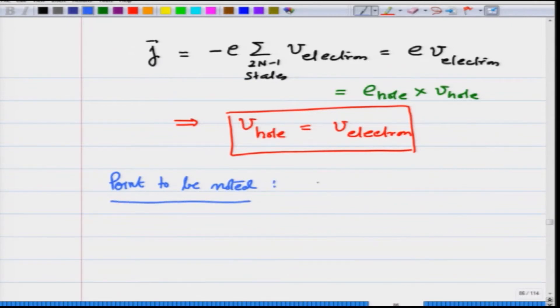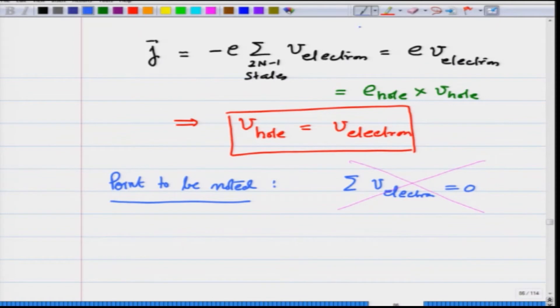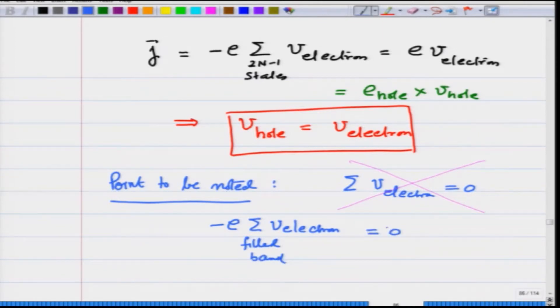The key point to note is that we did not do summation of v electrons equals 0. Instead, what we did was we said summation of minus e times v electrons over the filled band is equal to 0 — because it is the current, it is the charge-carrying capacity that we are talking about. Therefore, I have to talk in terms of current if I want to talk about a hole carrying current, and that is what gives me v hole equals v electron.